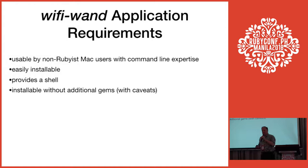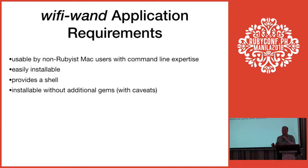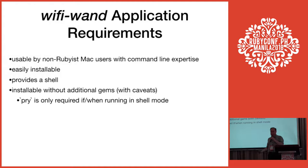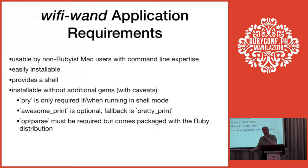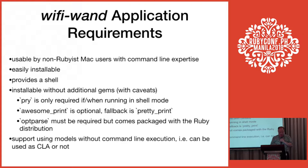I was concerned about non-Rubyists being worried about installing software they didn't know about. It started as a single file they could just copy and run, but now it's a gem. I wanted to minimize the number of gems they had to install — ideally zero. Pry is only required if and when shell mode is requested. AwesomePrint is used when found but is optional; if not found, we fall back to pretty print. For option parsing I used OptParse, which comes with the Ruby distribution and doesn't require installing another gem.